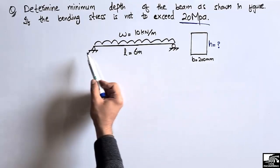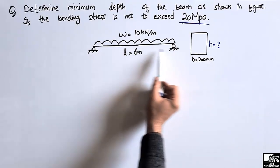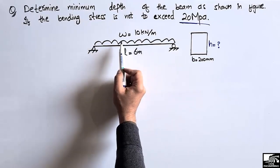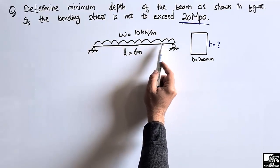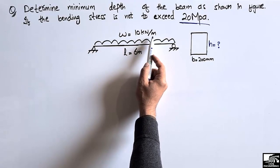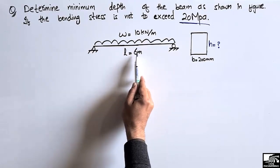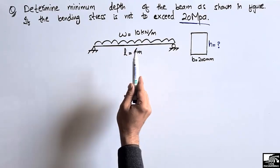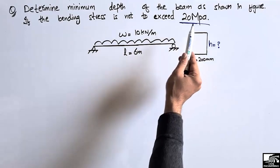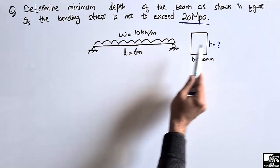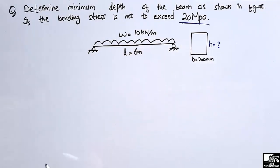This is a simply supported beam with two supports at each end. A uniformly distributed load acts on this beam of 10 kN per meter, and the total length of the beam is 6 meters. So if the bending stress is not to exceed 20 megapascals, what should be the minimum depth of the beam?